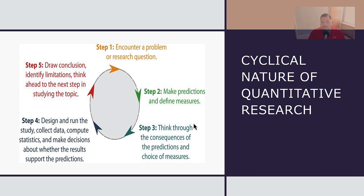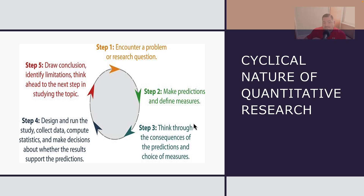The first thing that happens, as you can see from the slide, is that we encounter some type of research question or problem that society has determined exists, or a researcher who works in a particular area identifies a problem that needs to be fixed. Once we identify a problem or a gap in knowledge, the researcher will then start to make predictions or educated guesses — hypotheses — based on what they think will be the answer to that question.